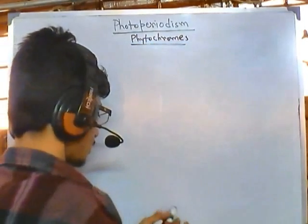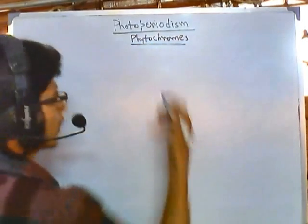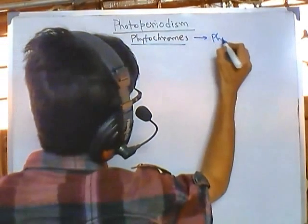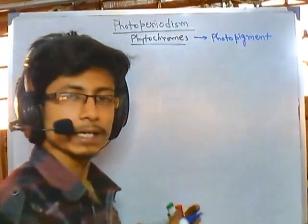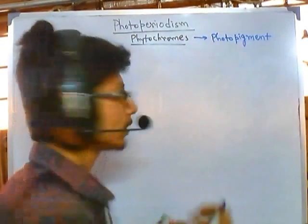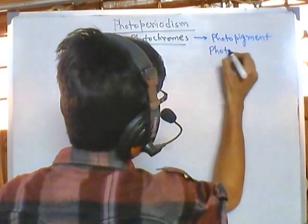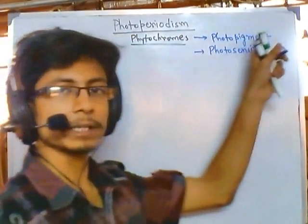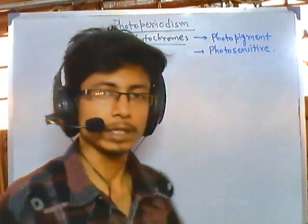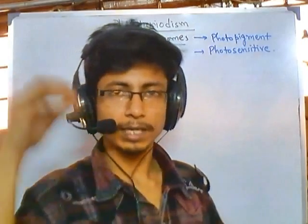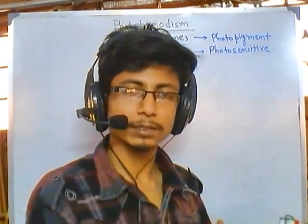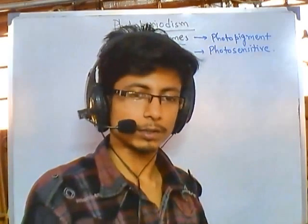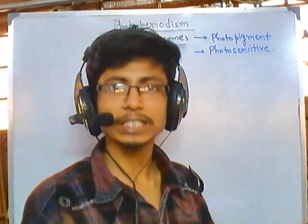Phytochrome is definitely a type of photopigment. What we mean by photopigment is they can sense light, so they are photosensitive in nature. When light hits onto the pigment it usually changes its conformation from one particular state to another — it undergoes a conformational shift upon hitting the light.